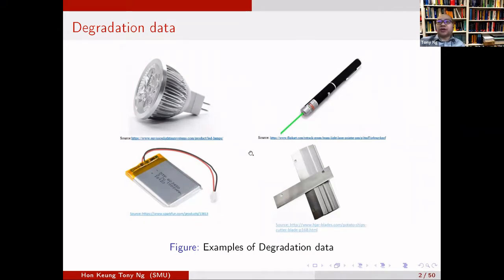All these items are subject to degradation — they have high reliability, meaning it takes a long time for them to fail. Like LED lighting: on average, it will last 20 years. So it is impossible to do a live reliability test to get information about the lifetime. You cannot wait 20 years for that item to fail. Even accelerated life tests may not be feasible.